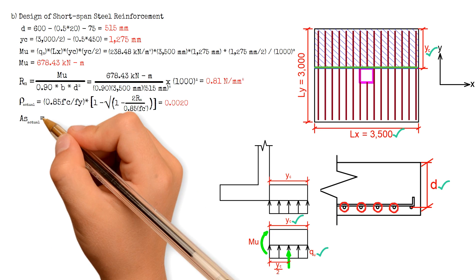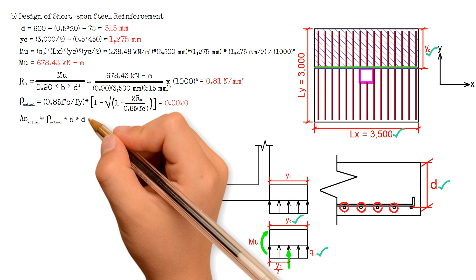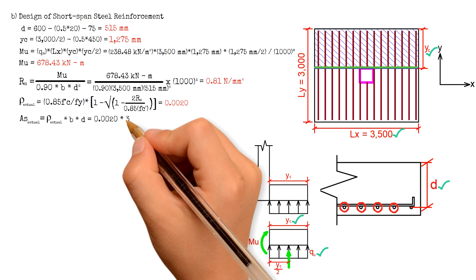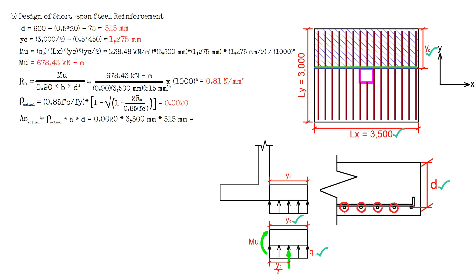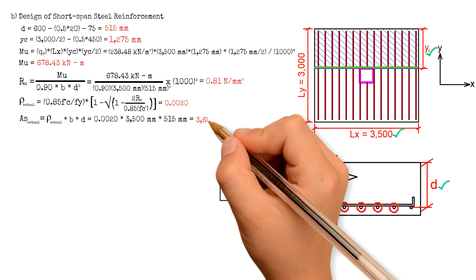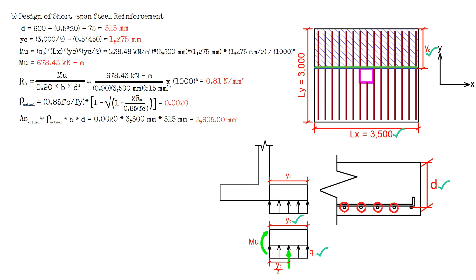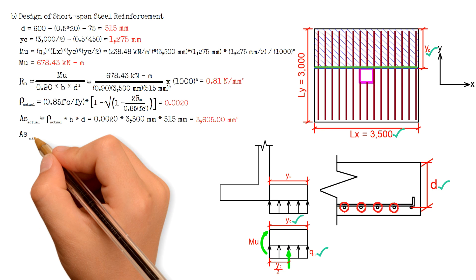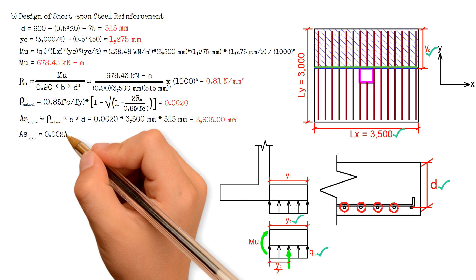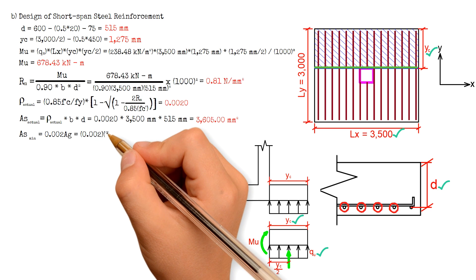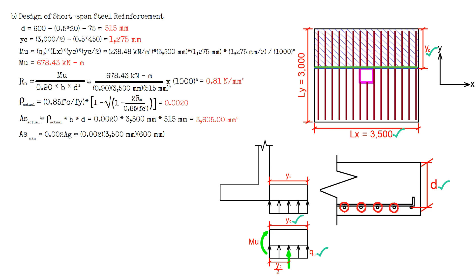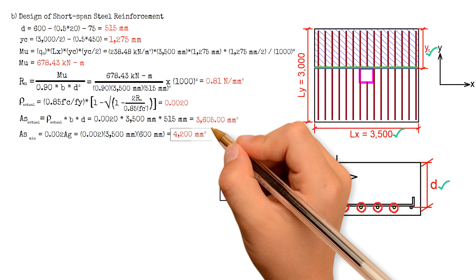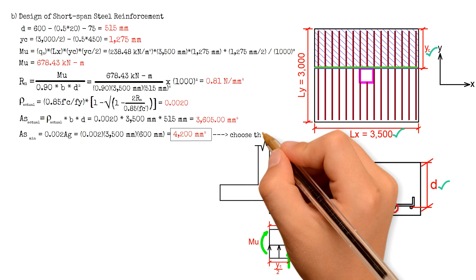To solve for the area of steel, we multiply the actual steel ratio 0.002 by the width B 3500 mm, times the effective depth D 515 mm, giving us 3,605 square millimeters. Comparing to the minimum area of steel at 0.002 times 3500 mm times 600 mm, the result is 4,200 square millimeters. We choose the larger value of 4,200 square millimeters.